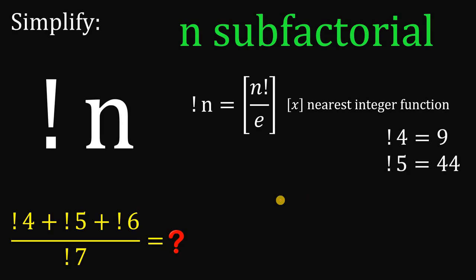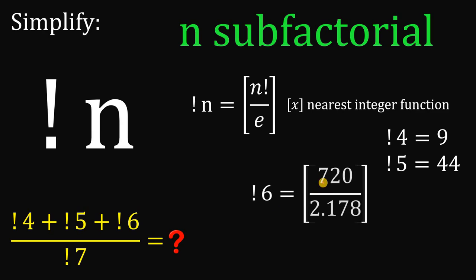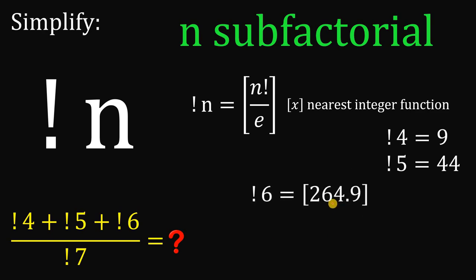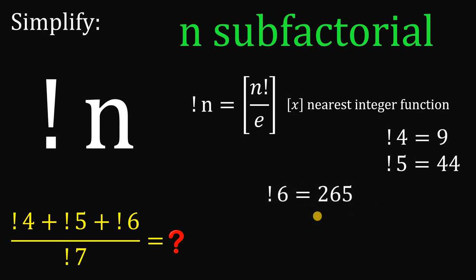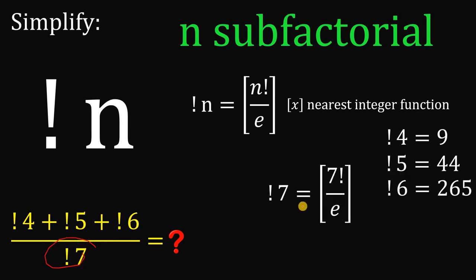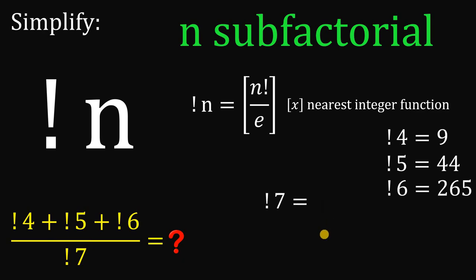For 6 sub-factorial, it equals the nearest integer value of 6 factorial over e. We have 720 divided by 2.718, which gives 264.9, and the nearest integer is 265. So 6 sub-factorial equals 265. For 7 sub-factorial, the nearest integer value of 7 factorial over e gives us 1854.